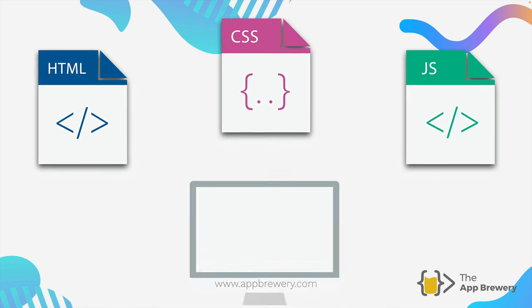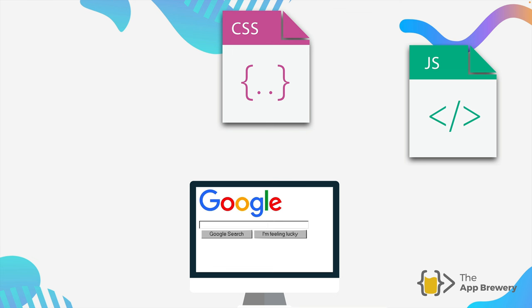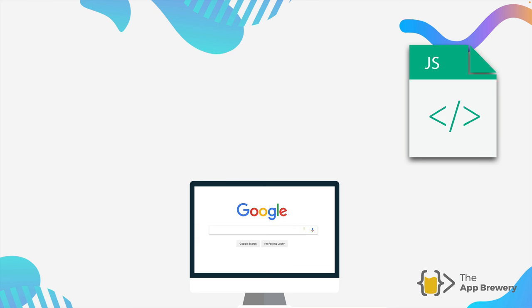So if we take the Google homepage as an example — once we receive these three types of files from the Google server, we can use our browser, which is a piece of software that specializes in dealing with these files. When the browser loads up the HTML, we get to see the content of the website. In this case there's one image which has the Google logo, two buttons, and a text box where we can enter our search term. When the browser then loads up the CSS files, it will modify the appearance of those components. We don't get any extra buttons or images with the CSS, but it will now look exactly the way Google wanted it to — the shape of the text box or the color of the buttons.